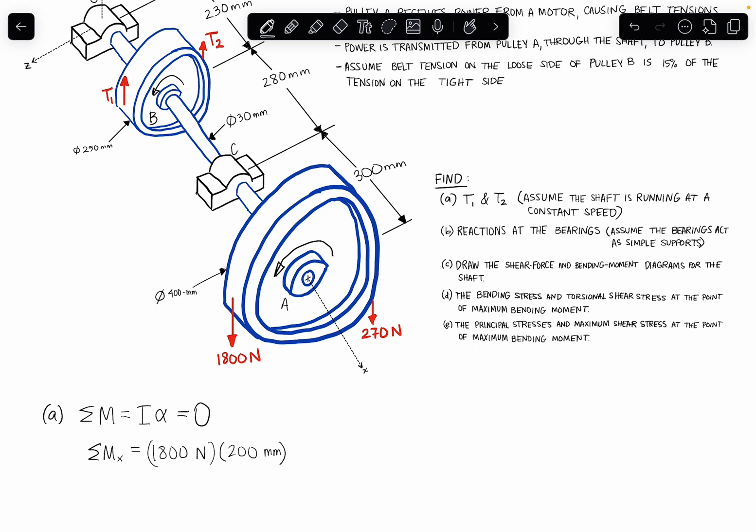Now we have another tension that's causing a moment to act on pulley A, and that's our light side tension. It's causing a moment acting in the opposite direction of the higher side tension, so that's minus 270 newtons, and then again, that is acting at a distance of 200 millimeters from the center.